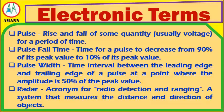Pulse Fall Time: the time for a pulse to decrease from 90% of its peak value to 10% of its peak value. Pulse Width: the time interval between the leading edge and trailing edge of a pulse at a point where the amplitude is 50% of the peak value.